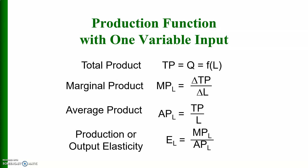When only labor is variable and all other inputs are fixed, the total production Q is a function of labor only. The marginal product of labor is the change in total product due to a unit change in labor. The average product of labor equals total product divided by labor. The output elasticity of labor equals the ratio of marginal product of labor to average product of labor.